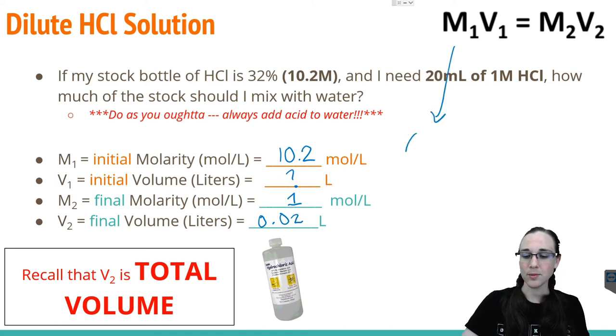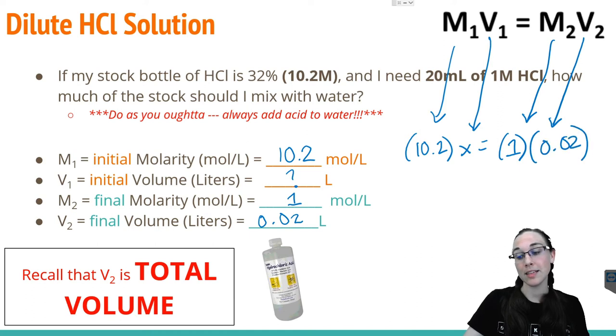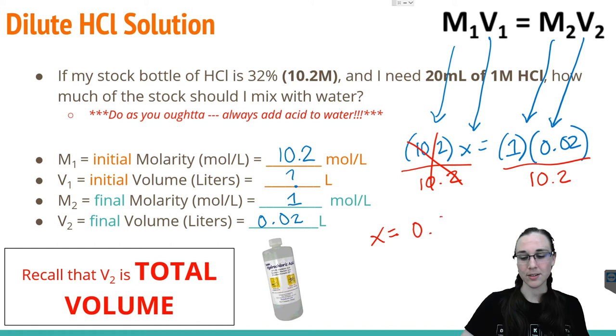Our M1, in this case, was 10.2 molar. Our V1 is our X variable that we're solving for. Our M2 is 1, and our V2 is 0.02 liters. In order to get the X alone, we're going to divide off the 10.2 from both sides to yield a final X value equivalent to 0.00196 liters.